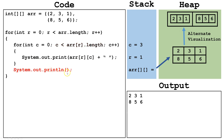We system out print line again, going down to the next line on the output. We get to the end of the outer loop, so we increment r to two. We check is two less than arr dot length — the number of rows is two — so two is not less than two, and we terminate this outer loop. Then we're done with our code.